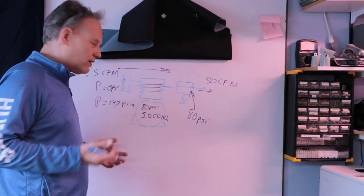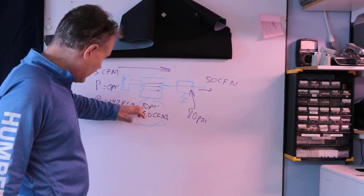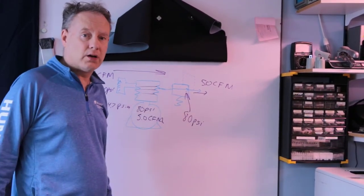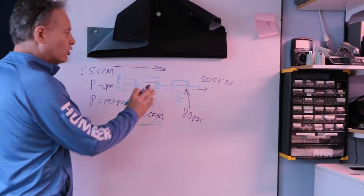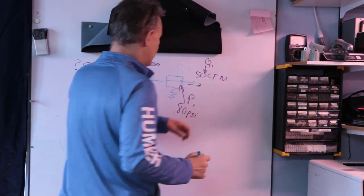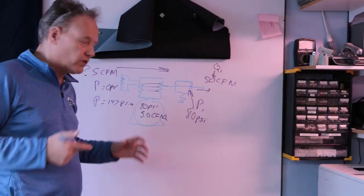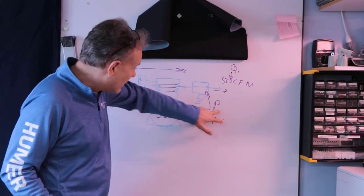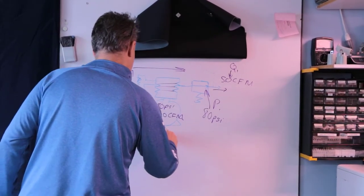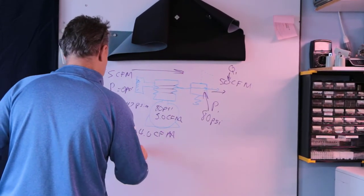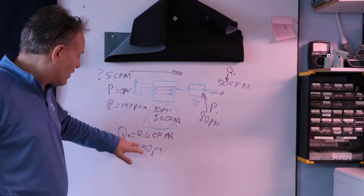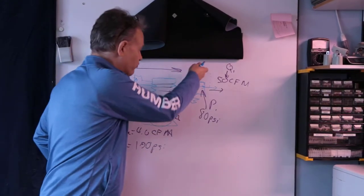My system needs to run on 100 PSI, and I only need four cubic feet per minute. I want to see if this compressor fits. So I'll call the rated condition Q1 and P1 — the before flow rate and pressure. If I set the compressor to 80 PSI it has a flow rate of 5 CFM. My Q2 is four cubic feet per minute and my P2 gauge pressure needs to be 100 PSI. The question is: will this give me four cubic feet per minute if I turn the regulator up to 100 PSI?